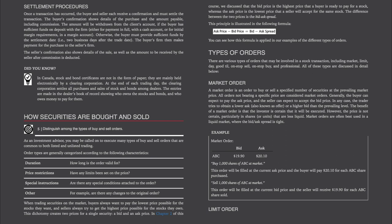Market order. A market order is an order to buy or sell a specified number of securities at the prevailing market price. All orders not bearing a specific price are considered market orders. Generally, the buyer can expect to pay the ask price and the seller can expect to accept the bid price. The benefit of a market order is that the investor is certain it will be executed; however, the price is not certain, particularly in less liquid shares. Market orders are often best used in a liquid market where the bid-ask spread is tight. Example: Buy 1,000 shares of ABC at market where the bid is $19.90 and the ask is $20.10 — this order will be filled at $20.10. Sell 1,000 shares of ABC at market — this order will be filled at the bid price of $19.90.